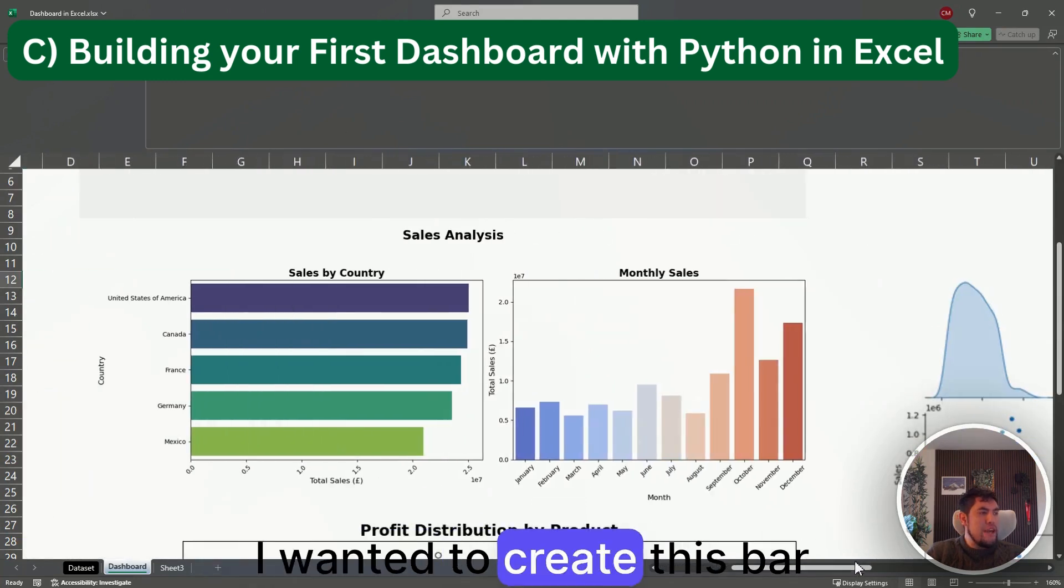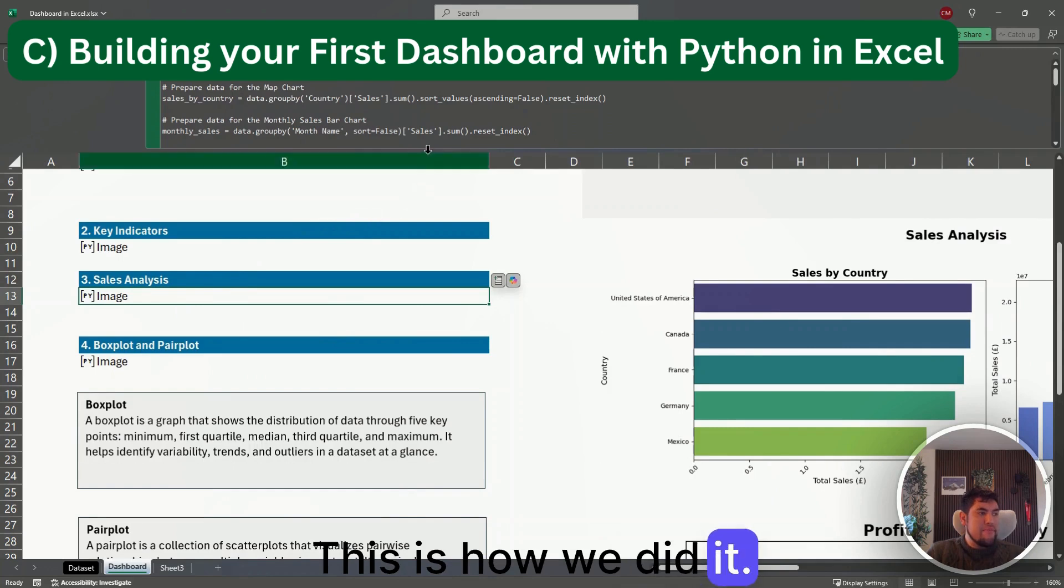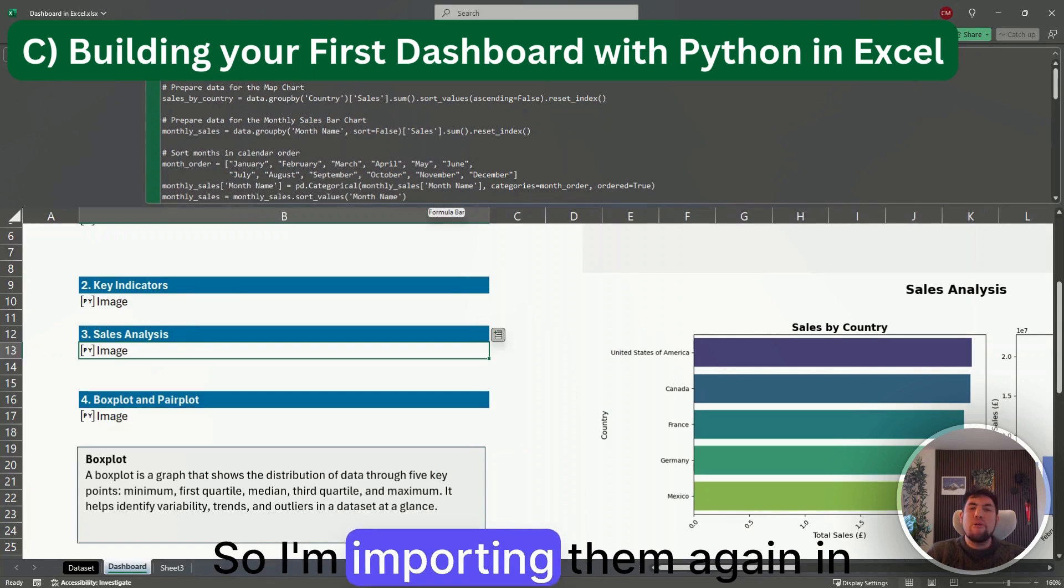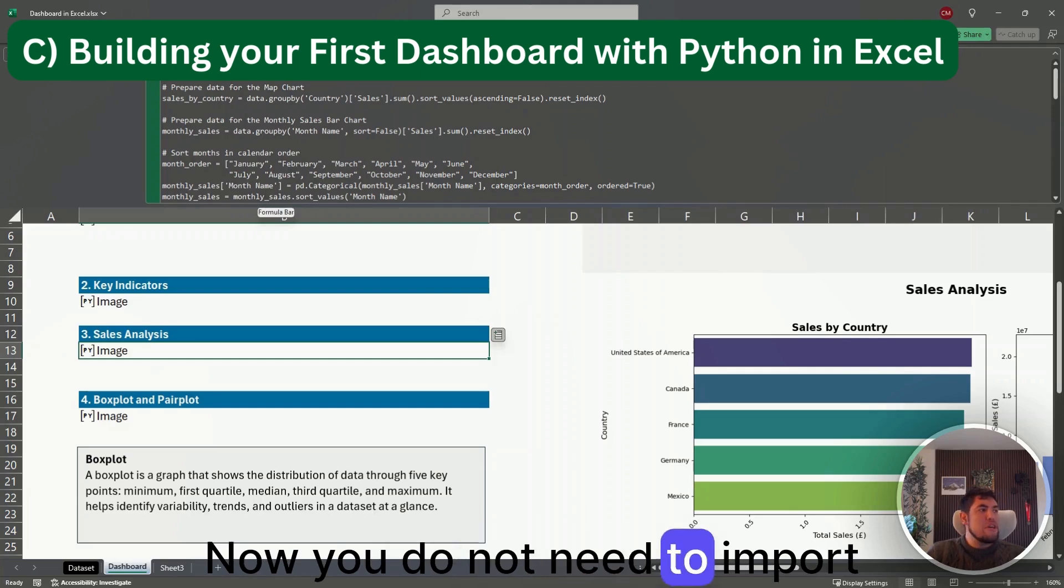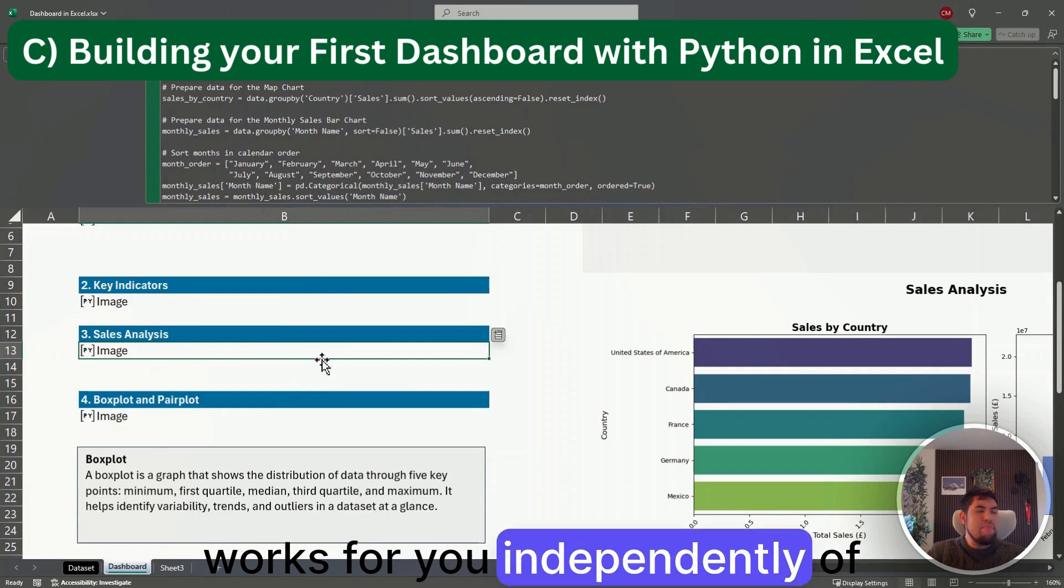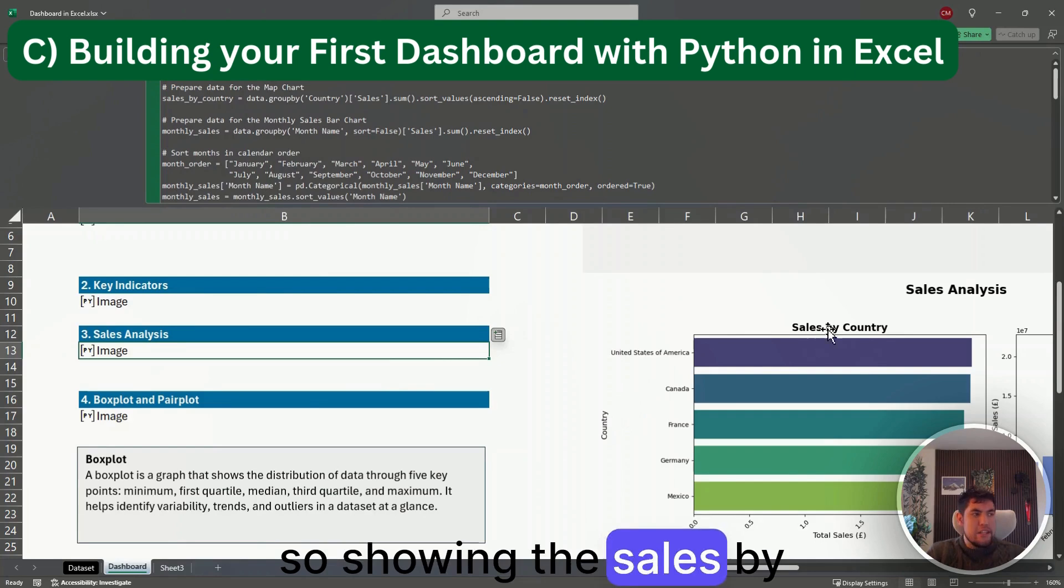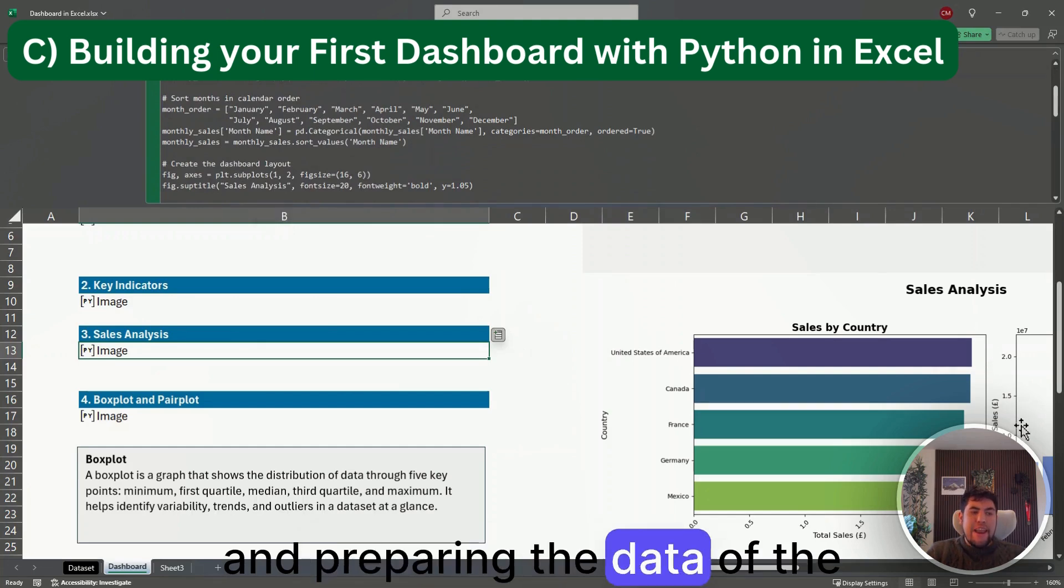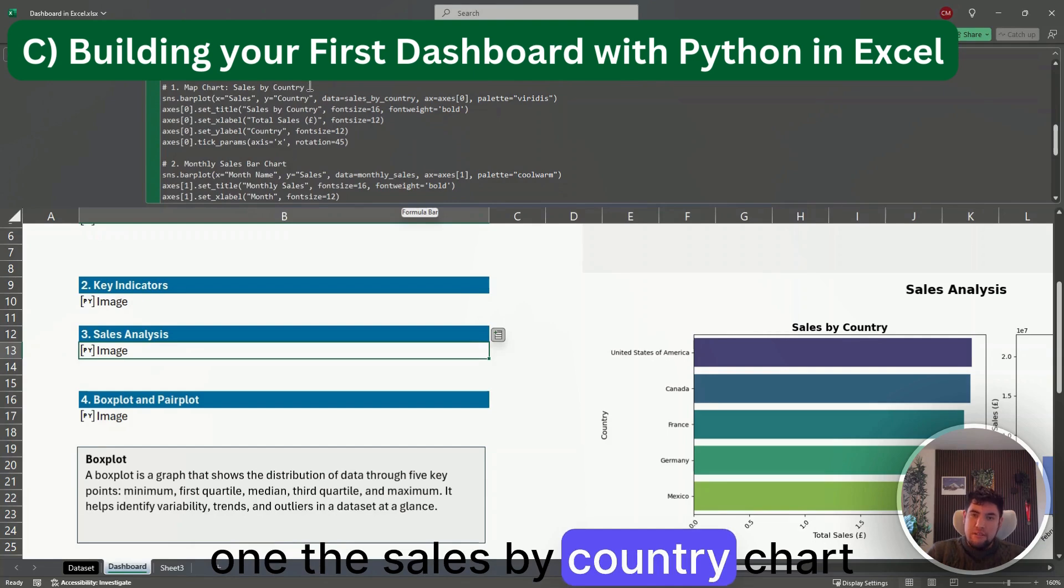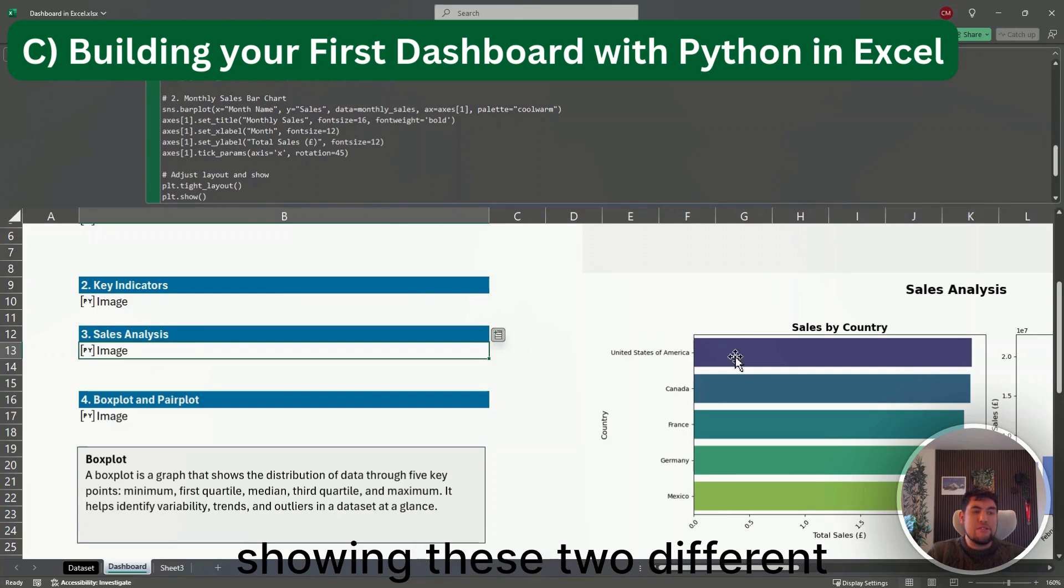The second part is the sales analysis. In here I wanted to create this bar graph of sales by country and also of monthly sales. This is how we did it. As I was mentioning before, we are using the libraries matplotlib and seaborn, so I'm importing them again in here. You do not need to import every time the libraries, but I just did it so that each individual part of the code works for you independently of the other codes. Here I'm preparing the data for the map chart showing the sales by country, and then creating in number one the sales by country chart and in number two the monthly sales bar chart. And at the end I'm just showing these two different graphs.